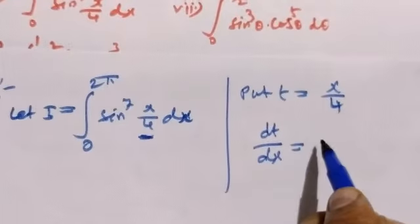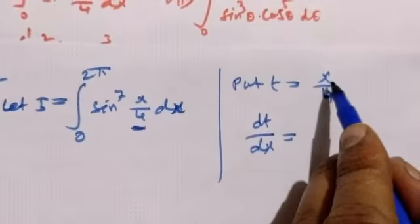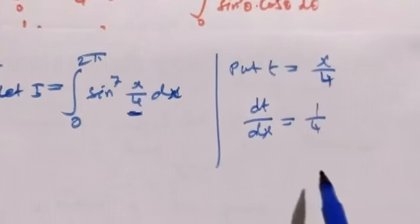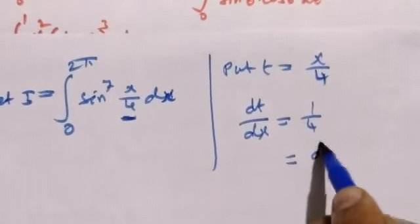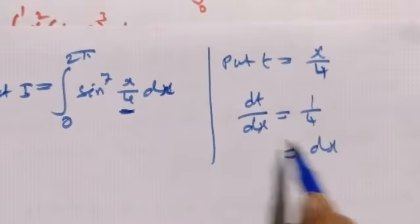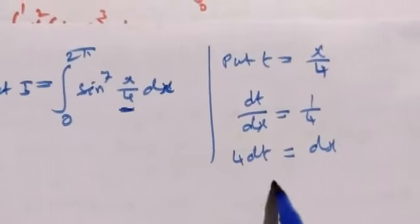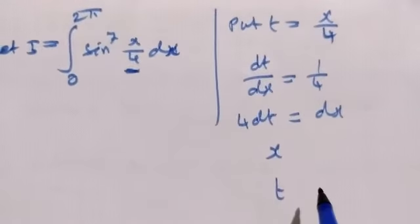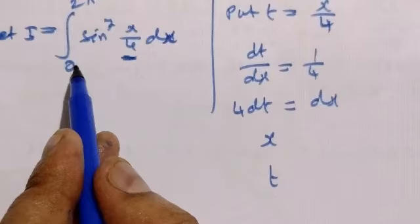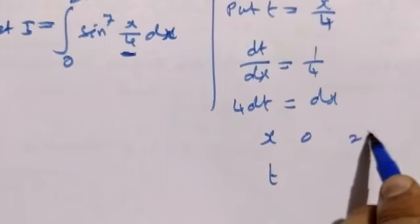Put t equal to x by 4. Then dt by dx equals 1 by 4, so dx equals 4 dt.